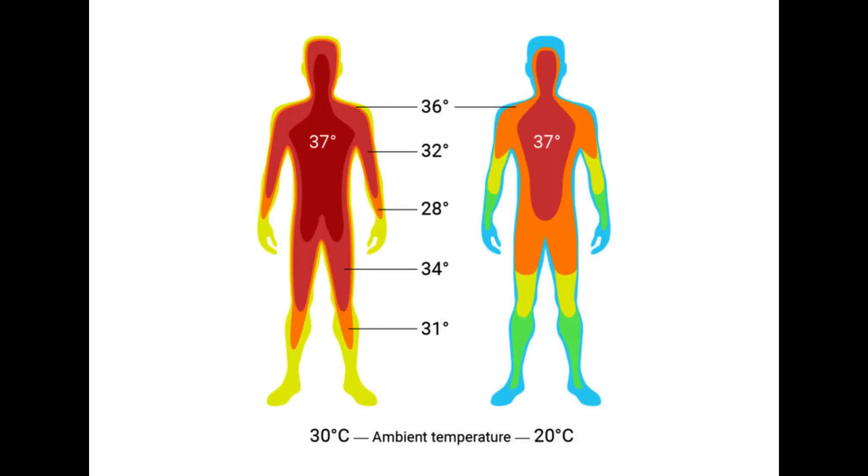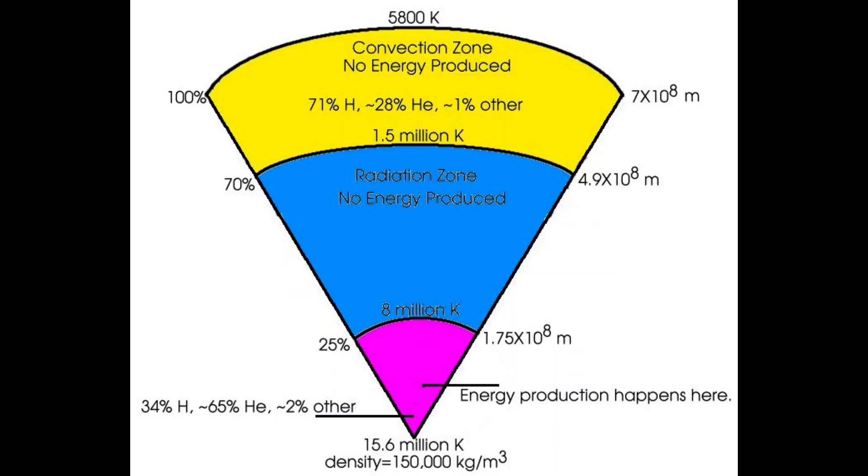But how could that be if your body is 37 degrees while the core of the sun is millions of degrees?